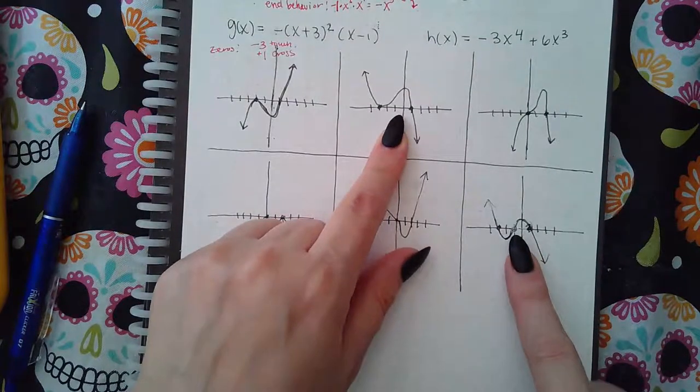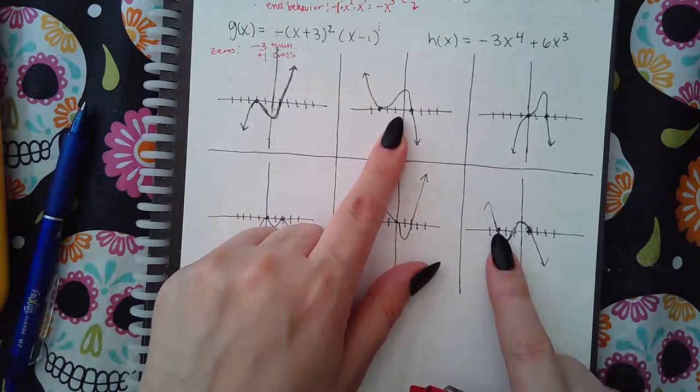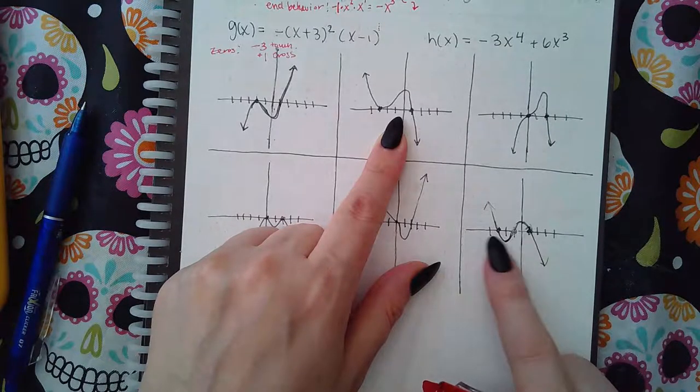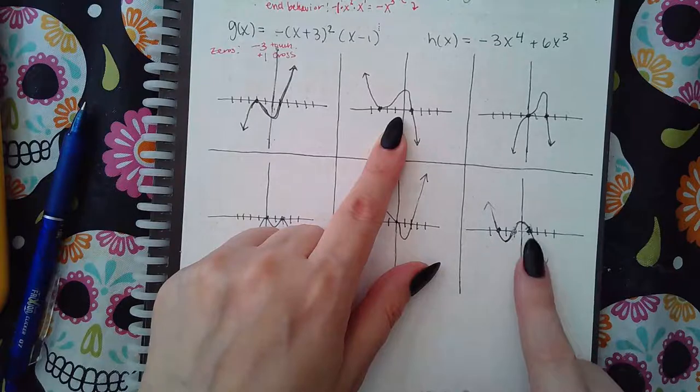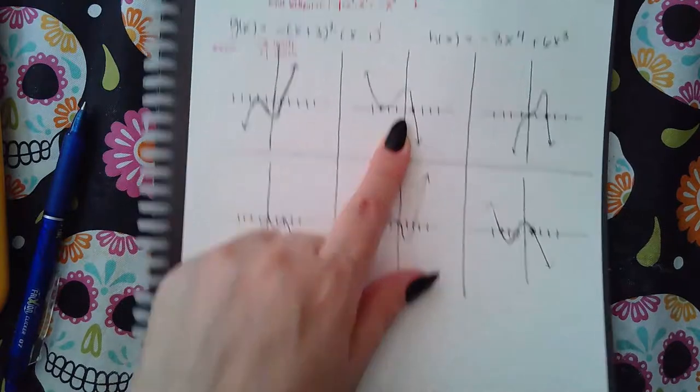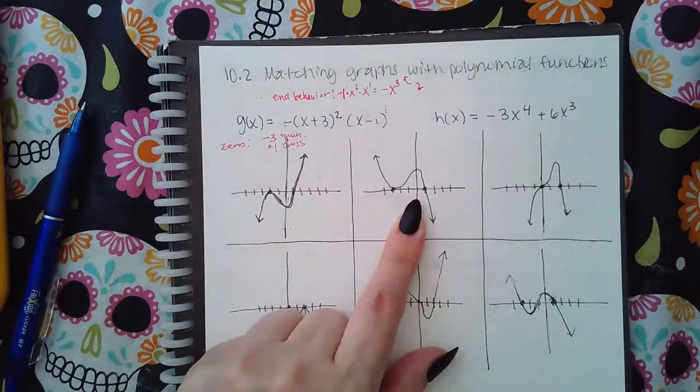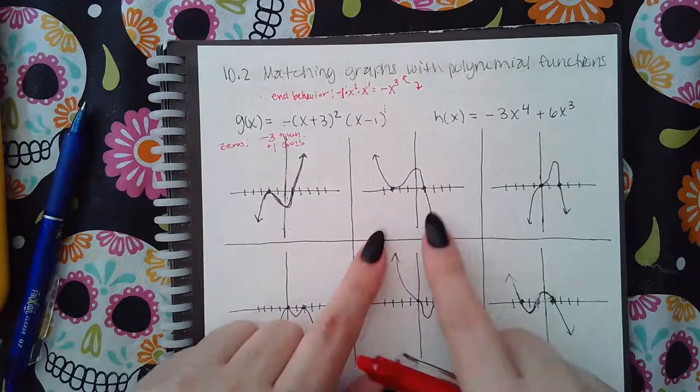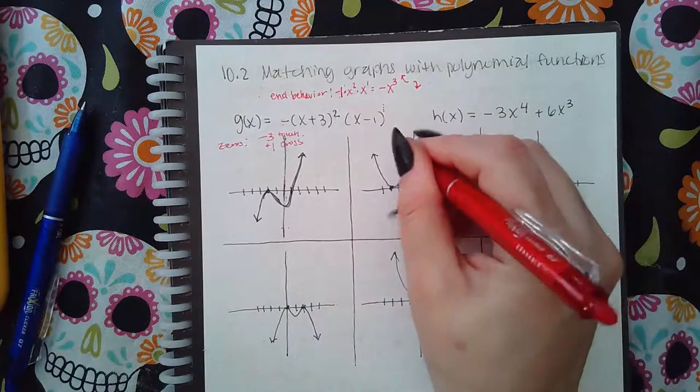This one, however, has an x-intercept at negative three, negative one, and one. This has too many x-intercepts to be our graph. We only had two x-intercepts. So this is not going to be the answer, which means this is the one that belongs to g of x.